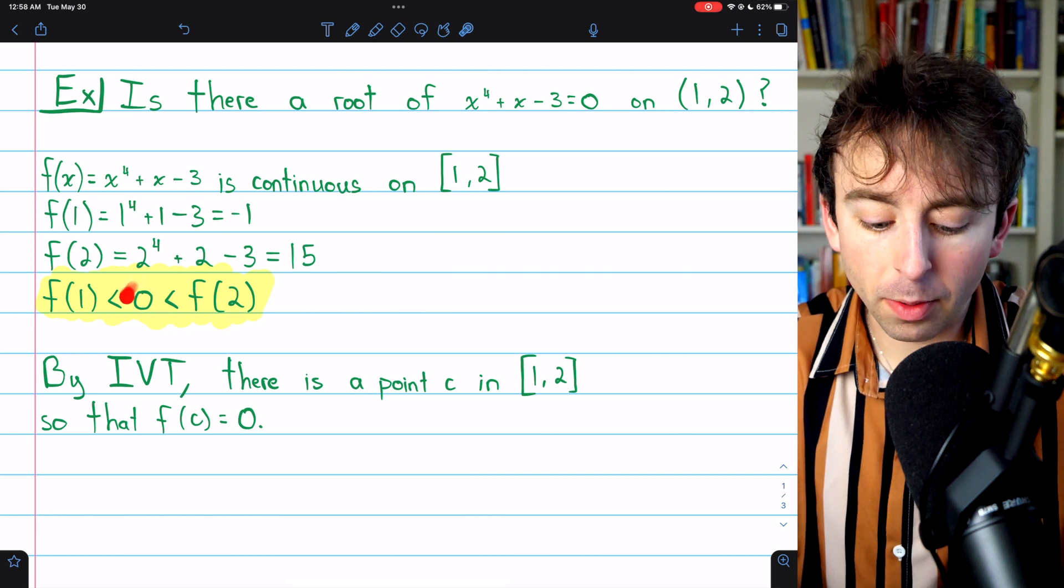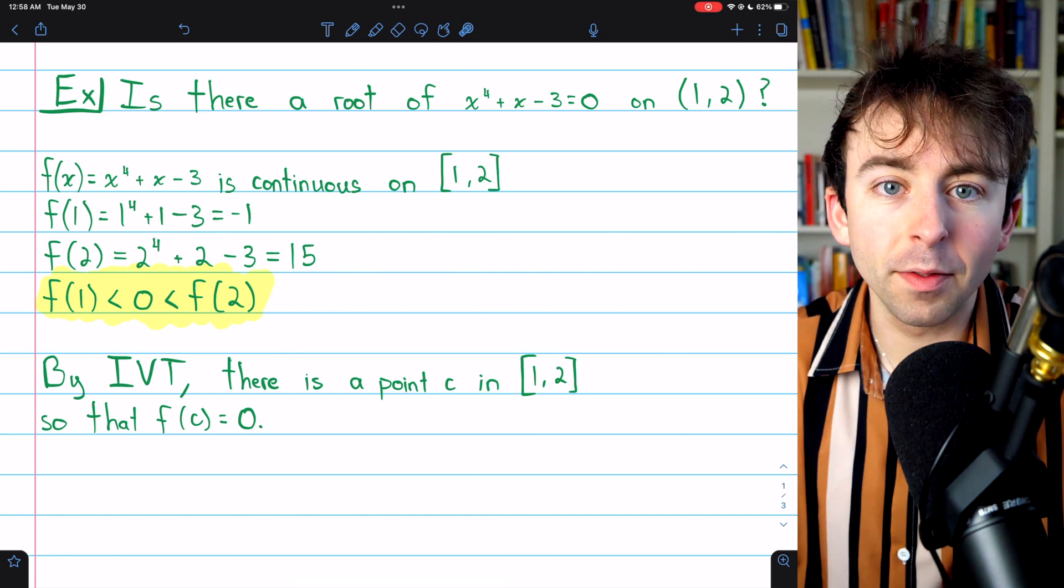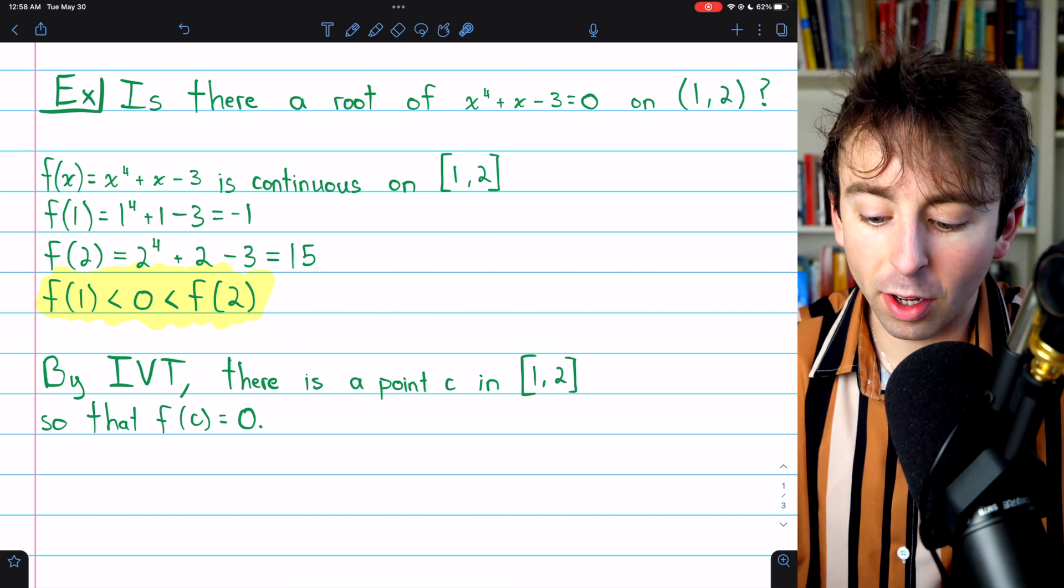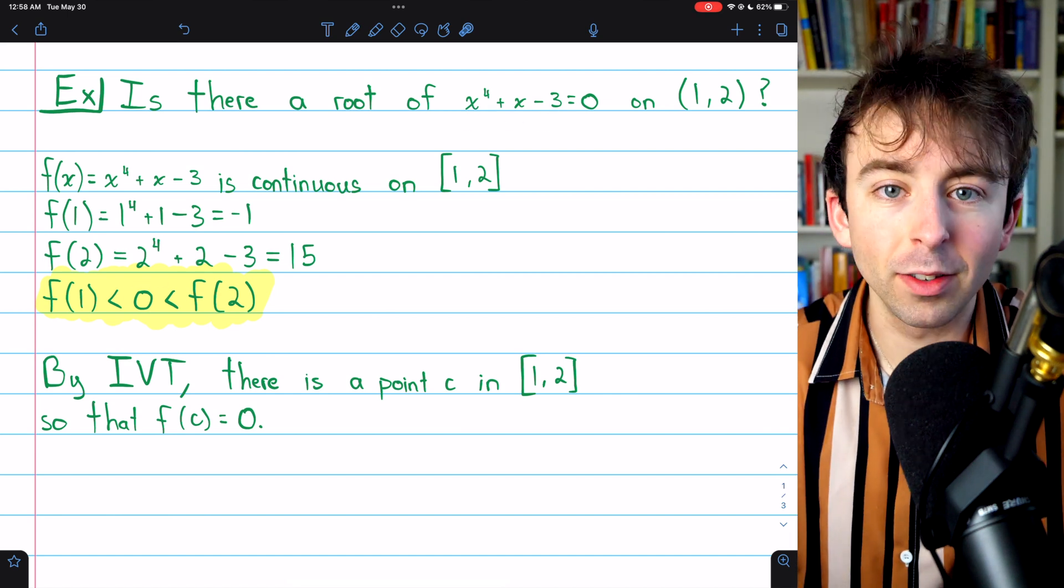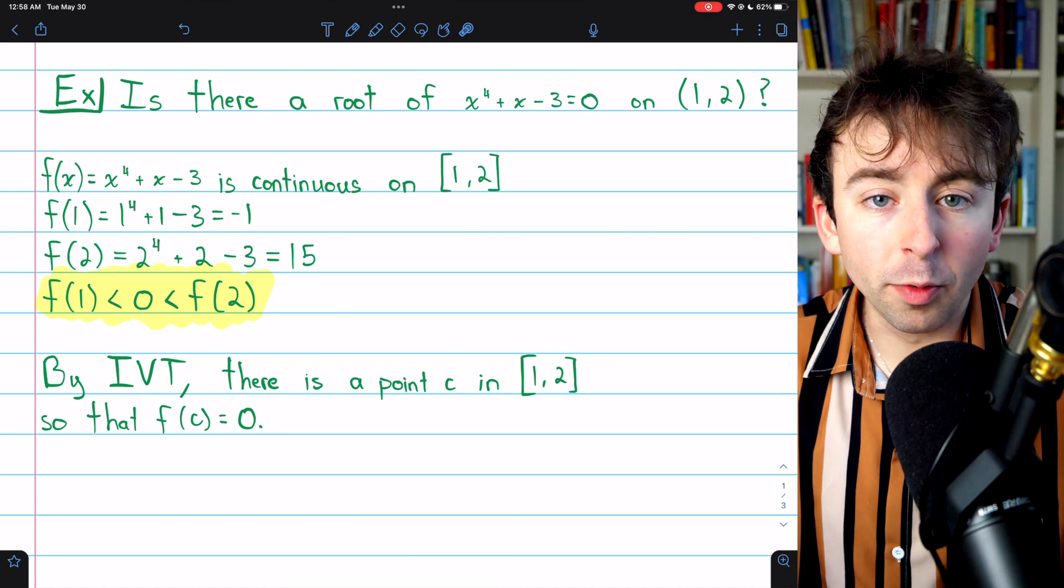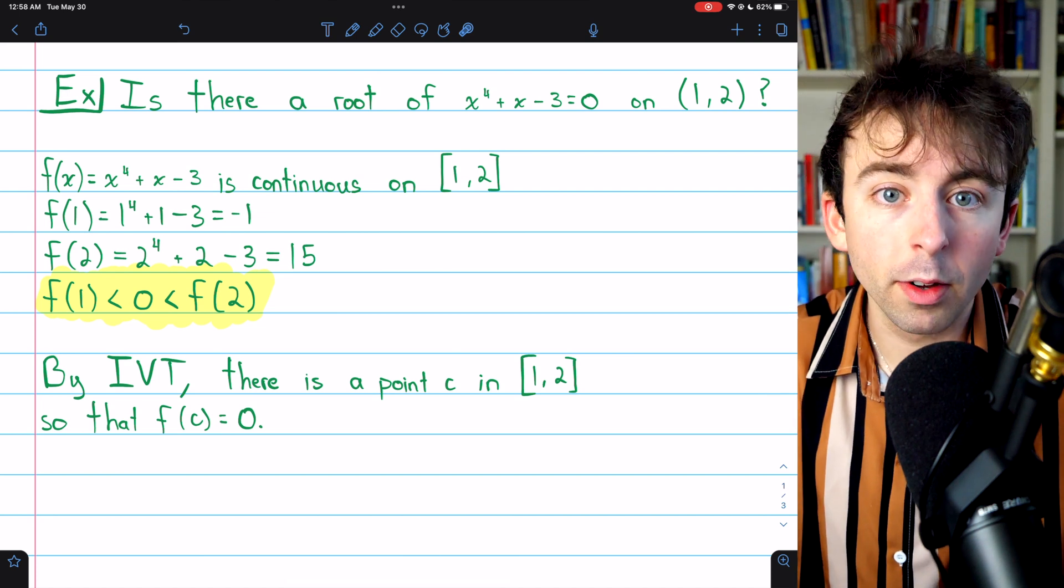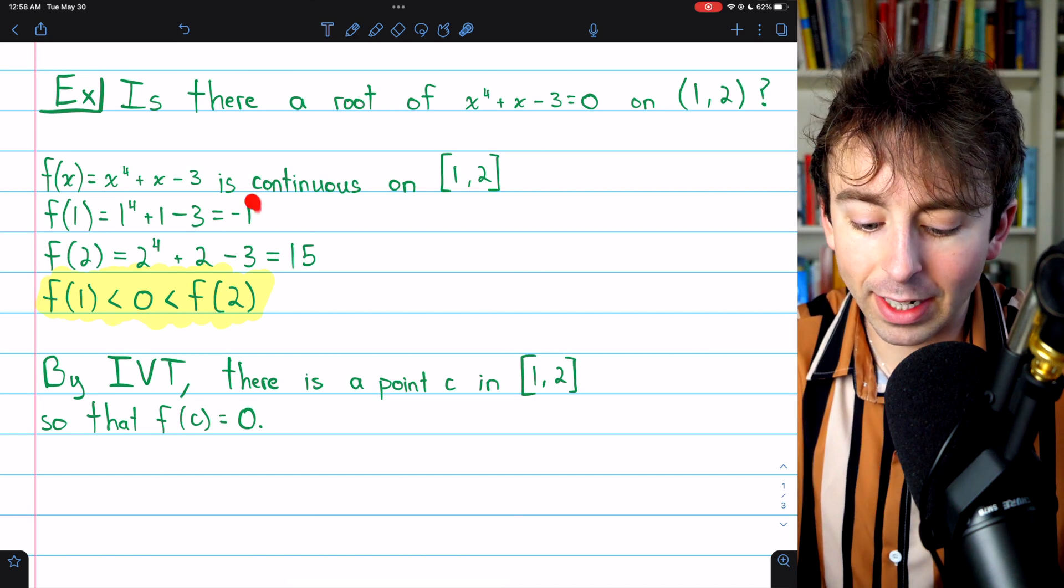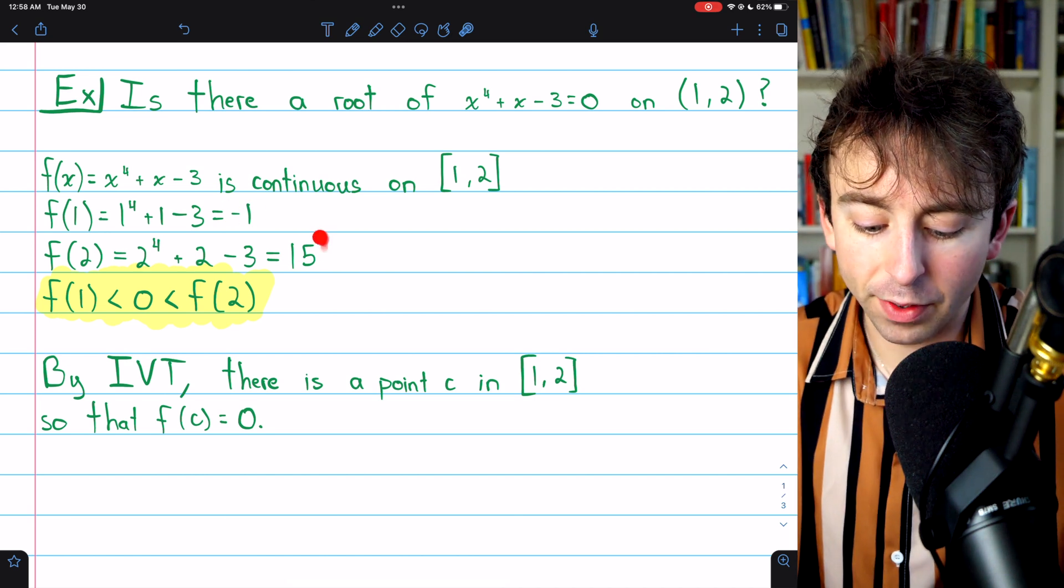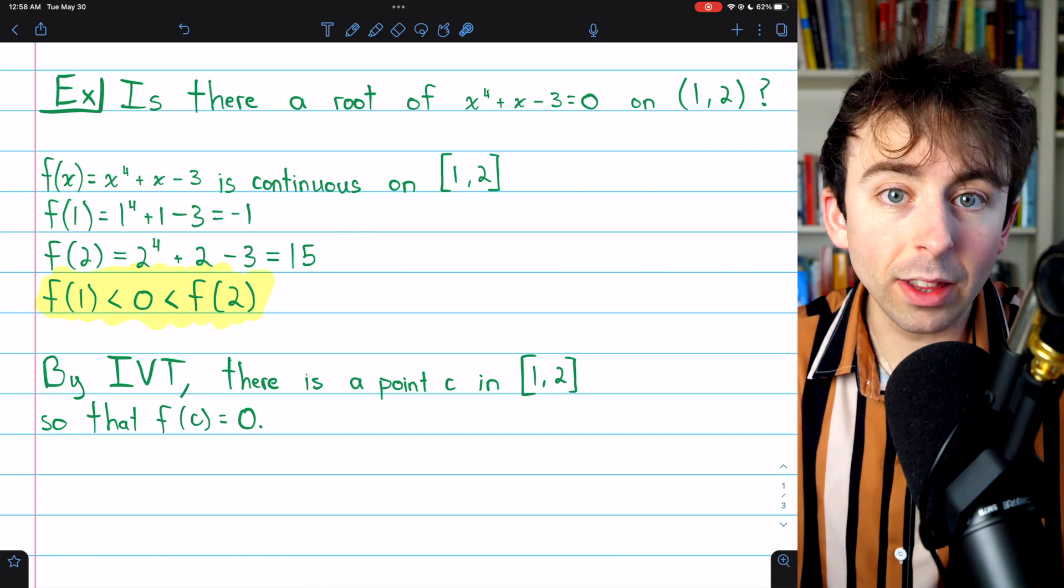I want to point out there's nothing special about 0 here in the context of the intermediate value theorem. It's just that we wanted this function to equal 0. So that's why we're concerned with 0. However, the function must have also passed through 1, for example, at some point on the interval, because it started at -1 and ended at 15.